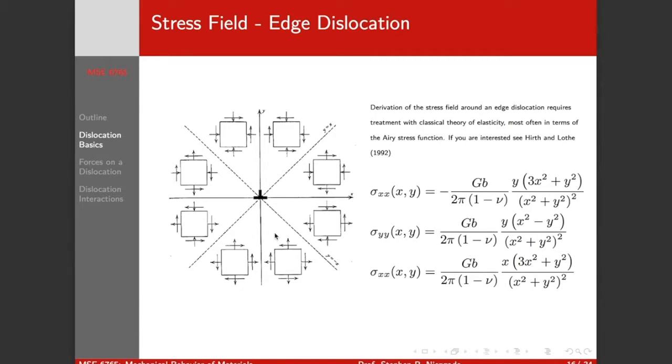Calculating the stress field around an edge dislocation requires a slightly deeper treatment of classical elasticity theory than we went into. We have to assume, most of the time, you assume an Airy stress analysis. And if we can write our Airy stress function, it's not too difficult if you have that background from if you ever took a class in the theory of elasticity. If you're interested, it's gone through in detail in Hirth and Lothe Theory of Dislocations and a lot of other dislocation texts.